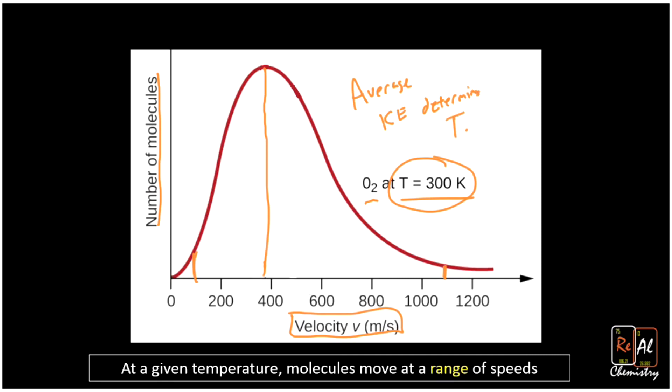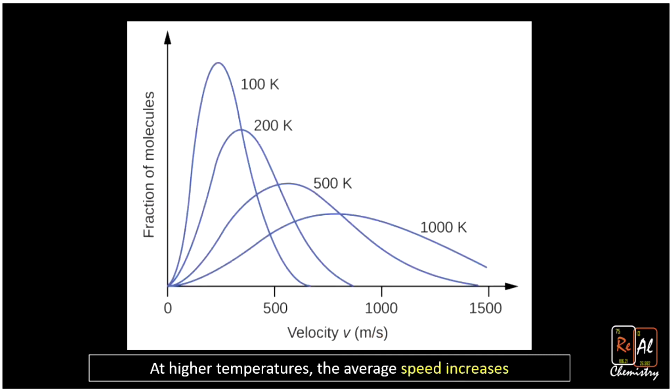Next, what I want to think about is what happens as we change that temperature. Here we have a similar figure telling us about the fraction of molecules or number of molecules at different velocities. We have a couple different curves. We have one curve, which is this first curve right here at 100 Kelvin, and then we have this other curve after stuff has been heated up at 1000 Kelvin.